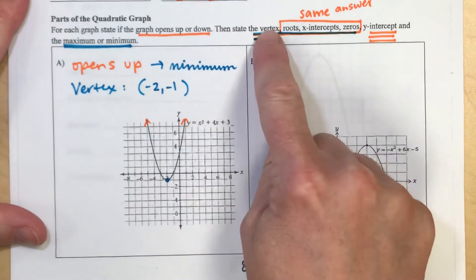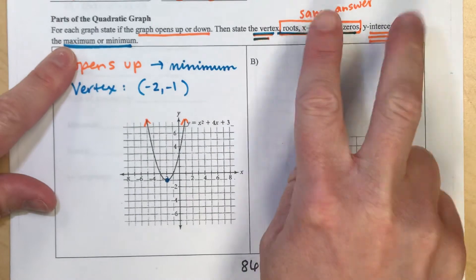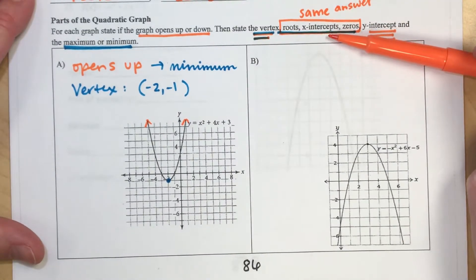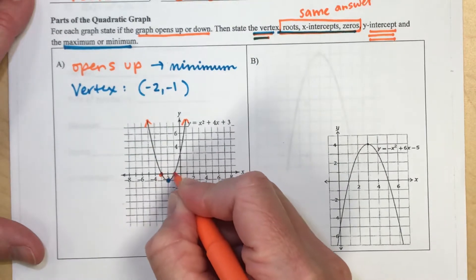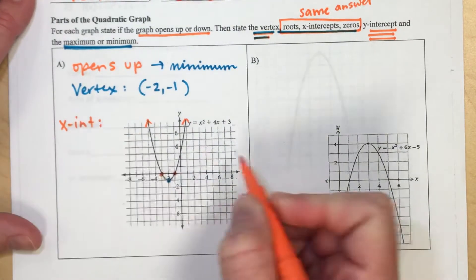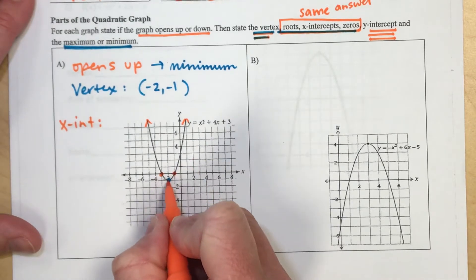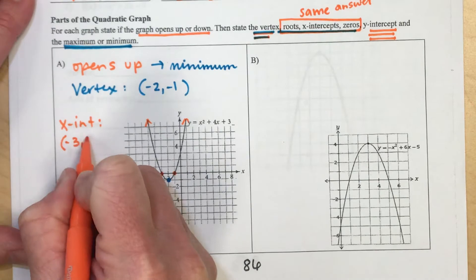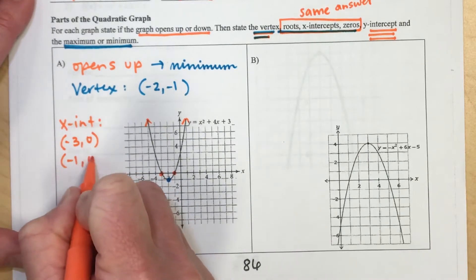So let's see, we did opens up, we talked about the vertex, I did minimum, so now I need to do these two things. Our roots are also called x-intercepts and I notice I have two of them here so we'll identify those next, x-intercepts. There are two, one of them is to the left of negative 2 here and to the right of negative 2, so it looks like negative 3, 0 and negative 1, 0.